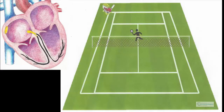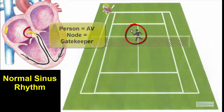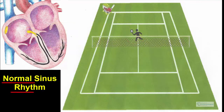Here is an analogy of what happens at the AV node that explains why the ventricular response occurs the way it does. I'll start by outlining what happens in normal sinus rhythm and then extrapolating to atrial fibrillation. In this scenario, I picture the heart as a tennis court with a person in the middle. The person represents the AV node, which I describe as the gatekeeper. In normal sinus rhythm,